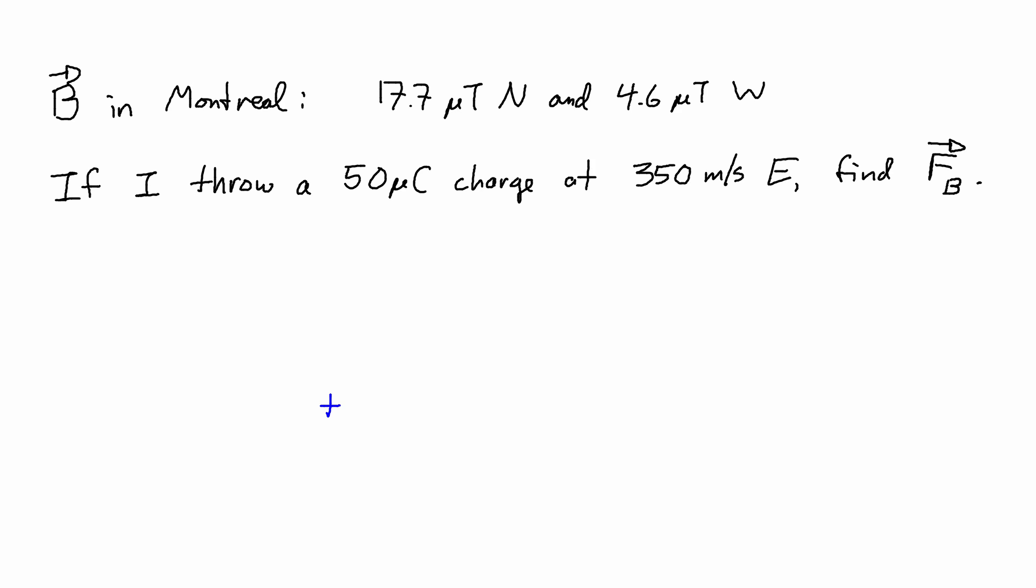So I need to sketch this out, as with any physics problem. I have my charged particle, it's 50 microcoulombs, and it's moving to the east. So I'll show the velocity going to the east, and the magnetic field has two components. I'm given a north component, which will be up, and there's a westward component, which I'll draw to the left.